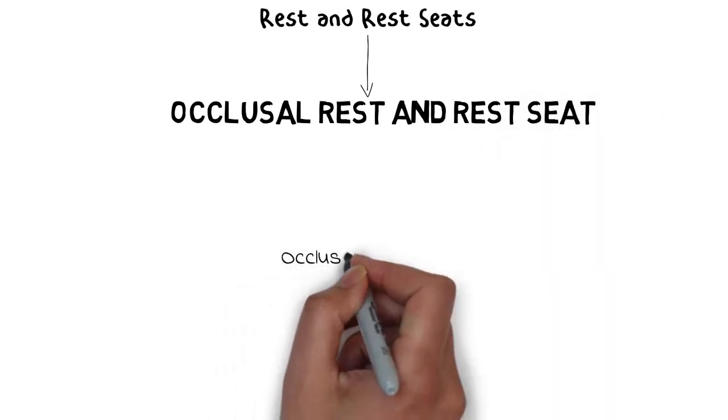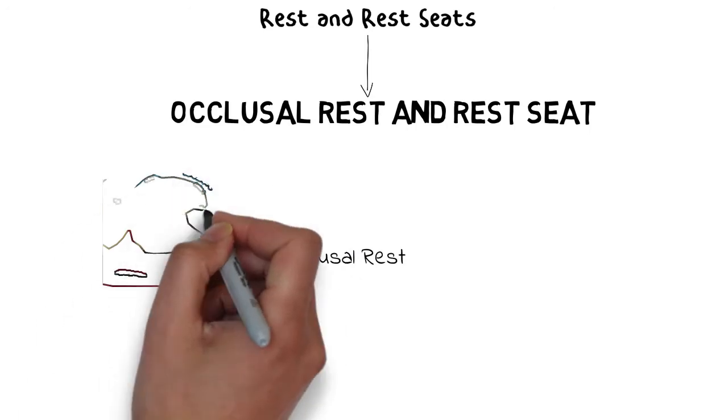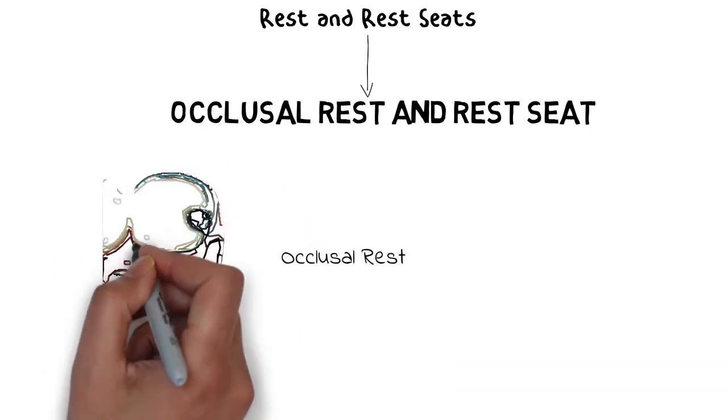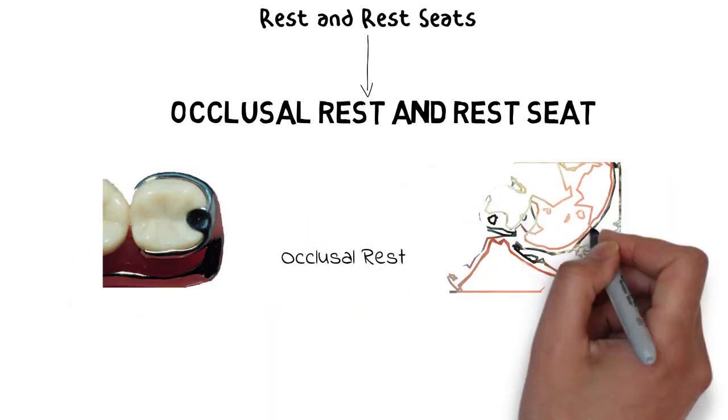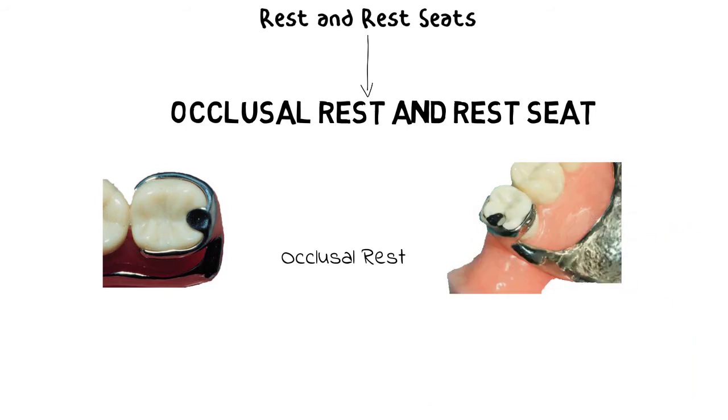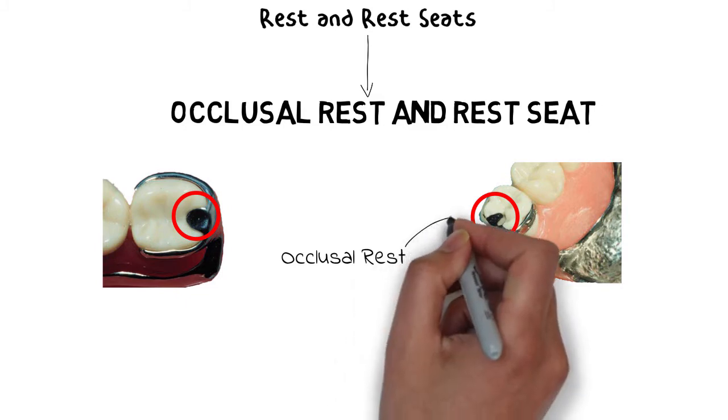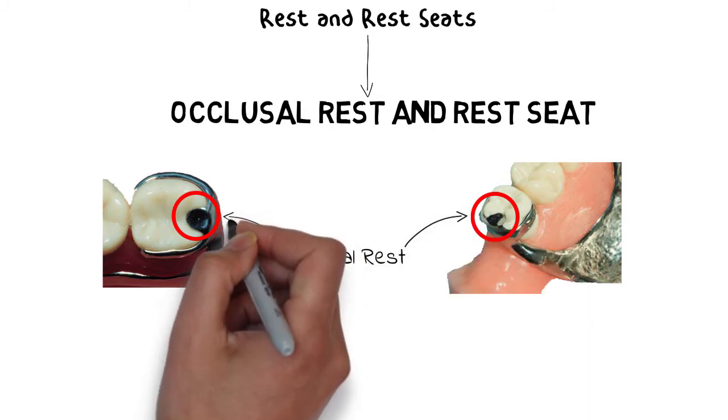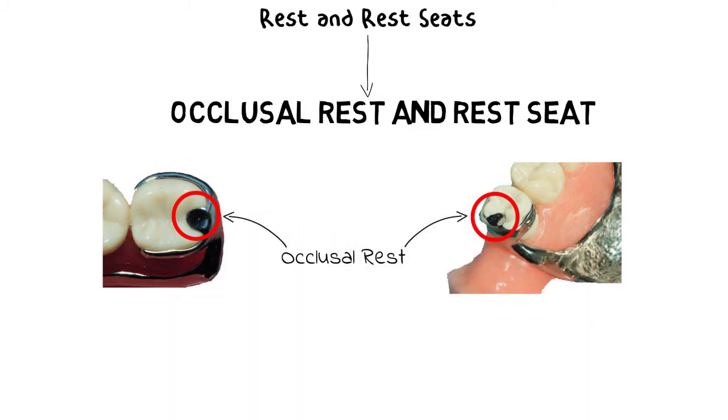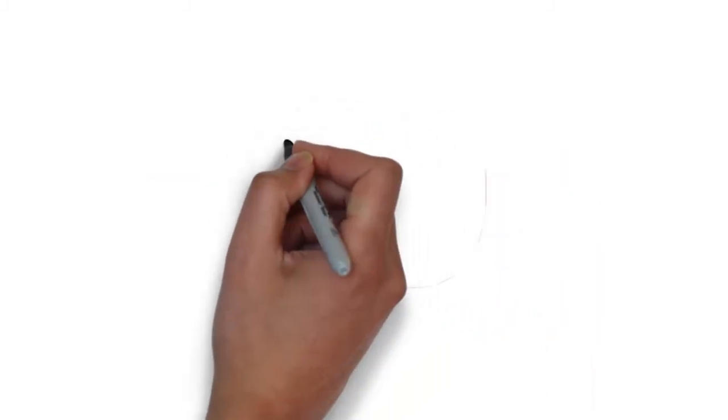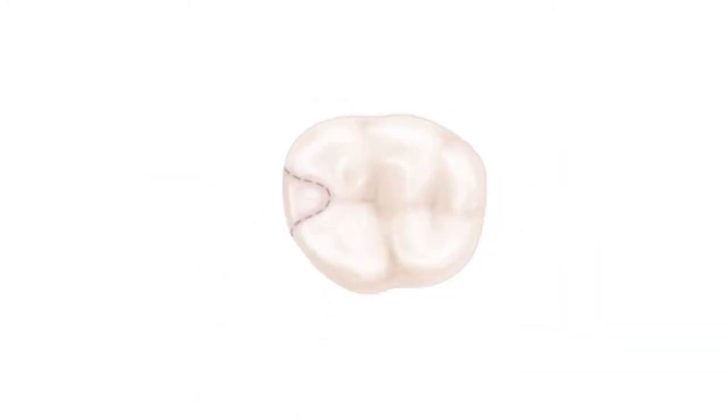As I've already stated, rest can be named according to the rest seat that is prepared to receive them. Occlusal rest is that type of rest that is located on the occlusal surface of the posterior teeth. The occlusal rest as well as the occlusal rest seat have a few design characteristics that are important for us to understand. First let's talk about the design features of the occlusal rest seat.